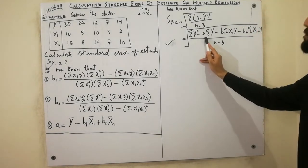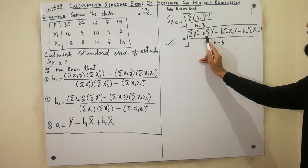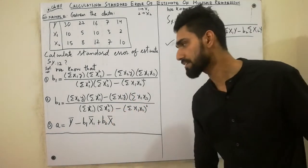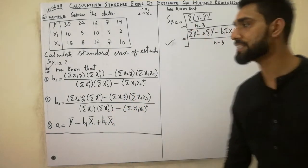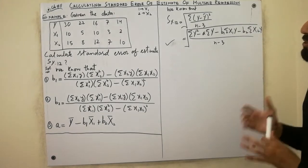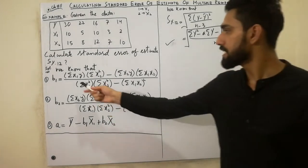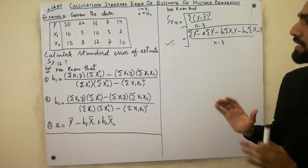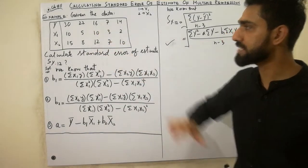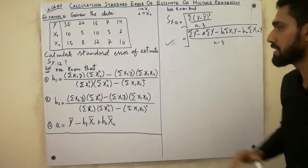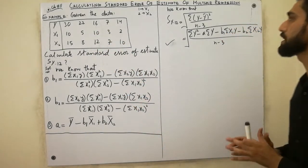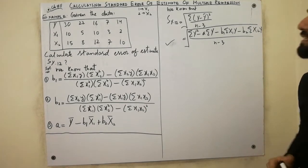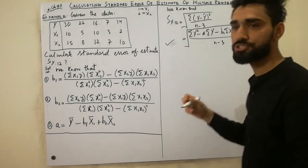For that we have some requirements. We have to calculate a, b1, and b2. For that we need to calculate summations: x1y, x2y, and others. So first of all we have to build the calculation table and sums, then put the values in — then the example will be solved. So let's start.